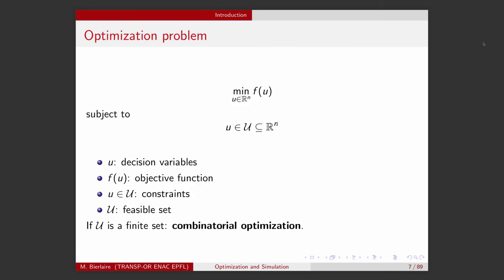If we consider the simulator as a black box, the optimization problem we are considering can be written as follows: we minimize the objective function as a function of the control variable. We could have defined the problem using maximization, but here we decide to minimize. If we prefer to maximize, we simply change the sign of F and we are back to a minimization problem. So by defining an optimization problem as a minimization problem, we don't lose any generality.